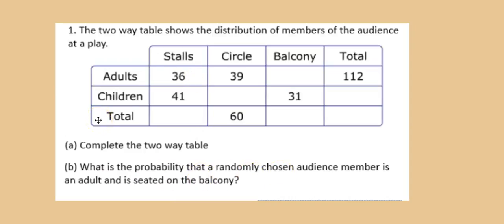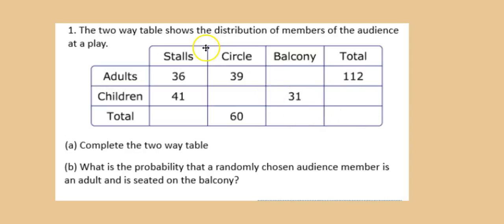It's just a case of adding and subtracting to fill in the gaps. This table is about members of an audience at a play. The stalls are the flat area closest to the stage, the circle is the area behind that or one balcony up, and the balcony is higher again. The stalls had 77 people — 39 plus 21 is 60, and so on — until the table is complete.